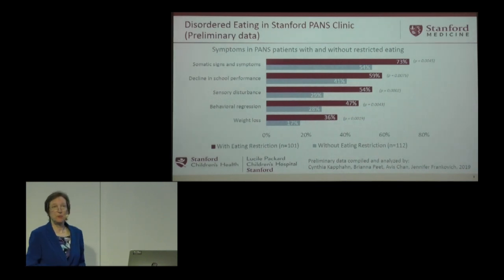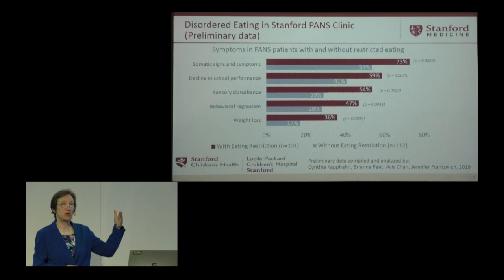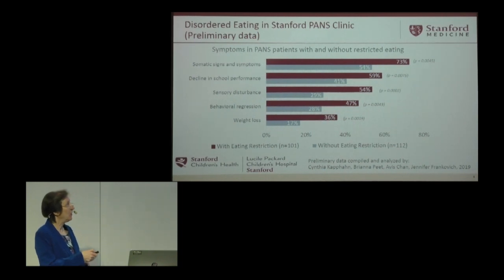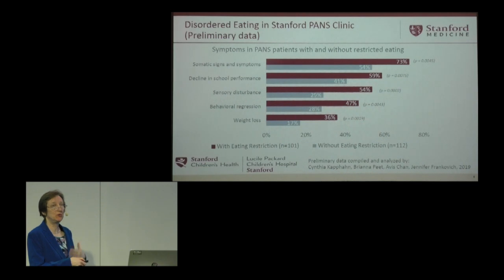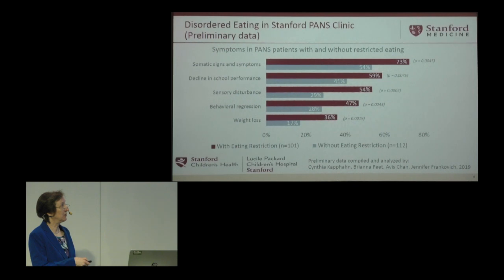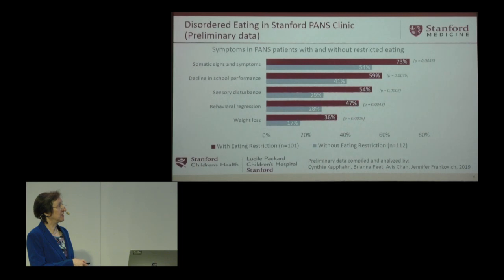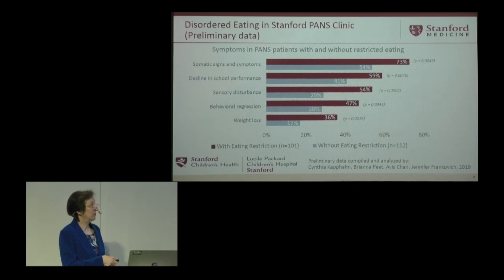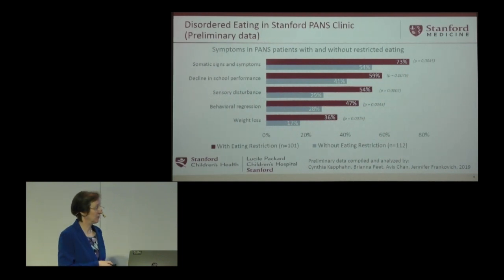There were significant differences between the group with eating restriction and those without. There was a significant increase in somatic signs and symptoms — sleep issues, urinary frequency — and a significantly increased number had a decline in school performance: 59% of those individuals did. There was also a higher likelihood of sensory disturbances and higher prevalence of behavioral regression. And 36% of those with eating issues had weight loss, compared to just 17% of those without food intake restrictions.